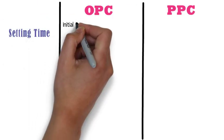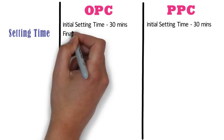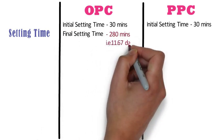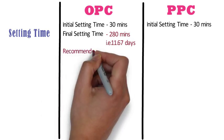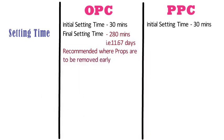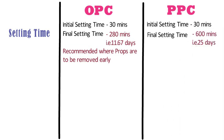Setting time. The initial setting time of both OPC and PPC is the same at 30 minutes. The final setting time of OPC is 280 minutes, so it is recommended in projects where props are to be removed early. On the other hand, the final setting time of PPC is 600 minutes, i.e. 25 days. PPC prolongs the setting time of concrete, which helps in better finishing.